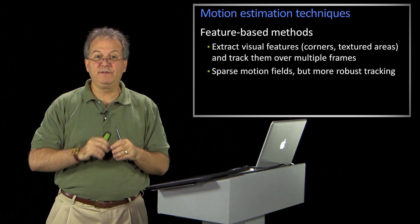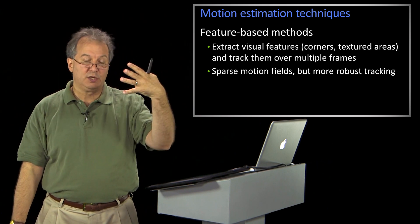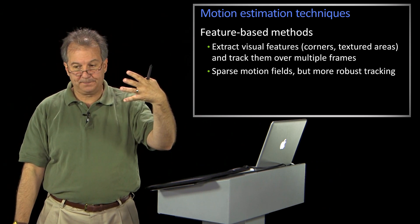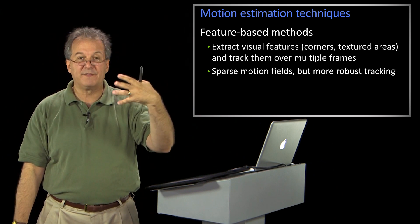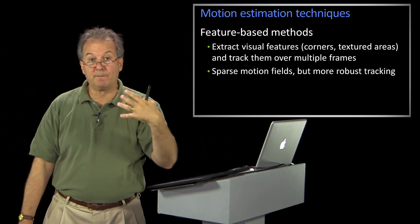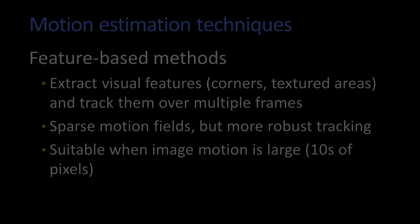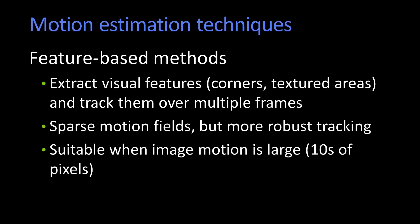And that will give you what's called a sparse motion field. That is, you don't have the motion of all the points — you have the motion of a bunch of points that were good to track. But that works really well when image motion is large, so you move like tens of pixels and you have a significant change between frames.